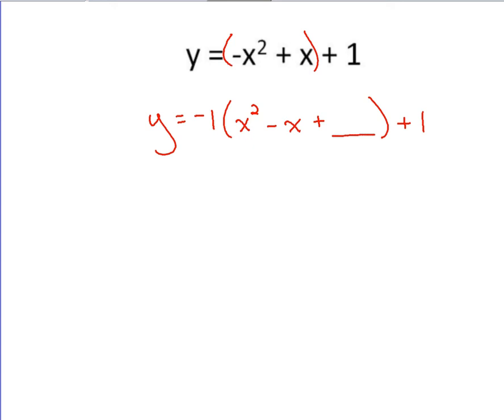The rule is, in completing the square, we're taking half of our coefficient here, negative 1, and we're squaring that. So half would be negative 1 half. Squaring negative 1 half would be 1 fourth.